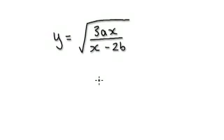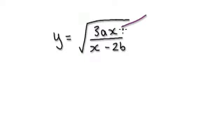Let me give you one last one — something like this. This one you don't really need to fully understand, just watch that it's possible. You're trying to make x the subject, but x appears here and here.